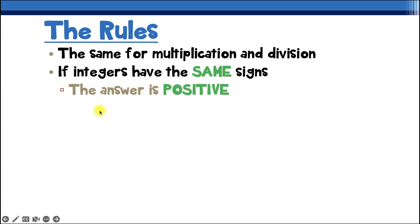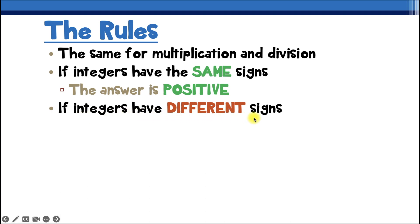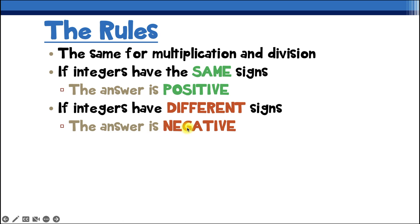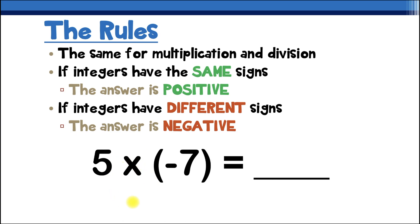If the integers have different signs, then the answer is going to be negative. So if one number is positive and one number is negative, our answer will be negative, because the signs of the numbers we're multiplying or dividing are different.